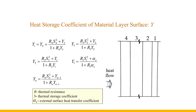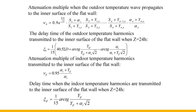The layer numbers in the general formula are numbered from the reverse of the heat flow transfer direction. The formulas for calculating the attenuation multiple and delay time when the outdoor temperature wave propagates to the inner surface of the flat wall use level numbers from inside to outside. The larger the attenuation factor, the greater the ability of the envelope to resist harmonic heat effects. The delay time is used to calculate the thermal stability of the envelope. Separate formulas apply when the indoor temperature wave propagates to the inner surface.